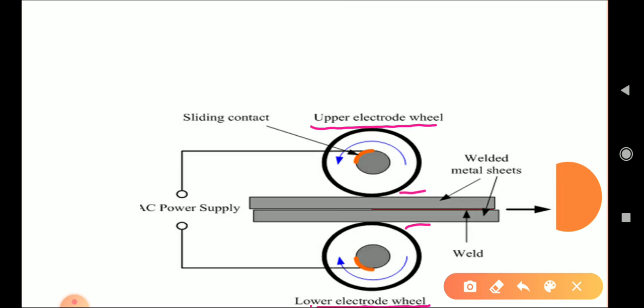The upper and lower wheels are connected to AC power supply - one wheel is positive and the other is negative, and we place the work in between them. We apply pressure on the sheet metal and start the power supply.